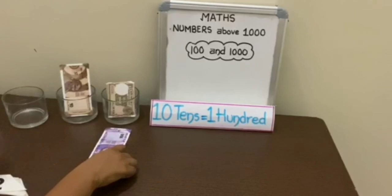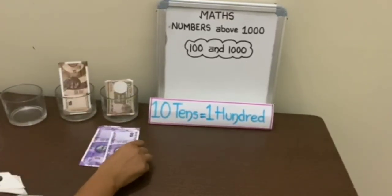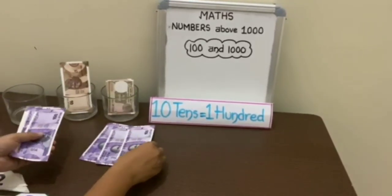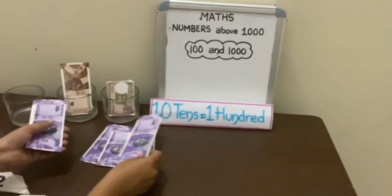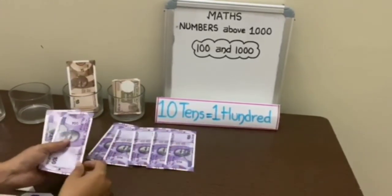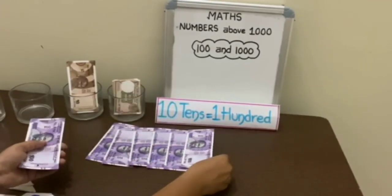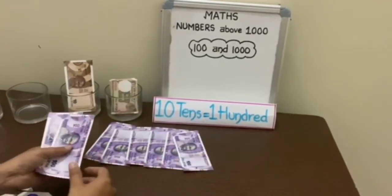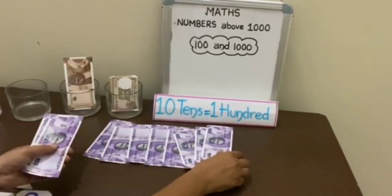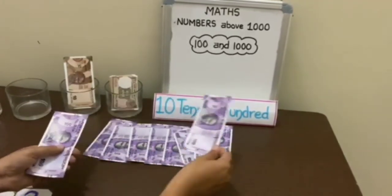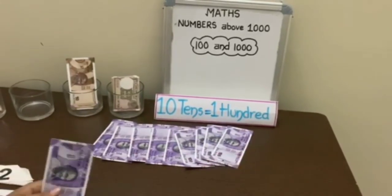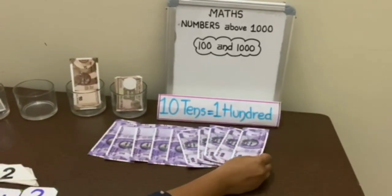100, 200, 300, 400, 500, 600, 700, 800, 900 and 1000.